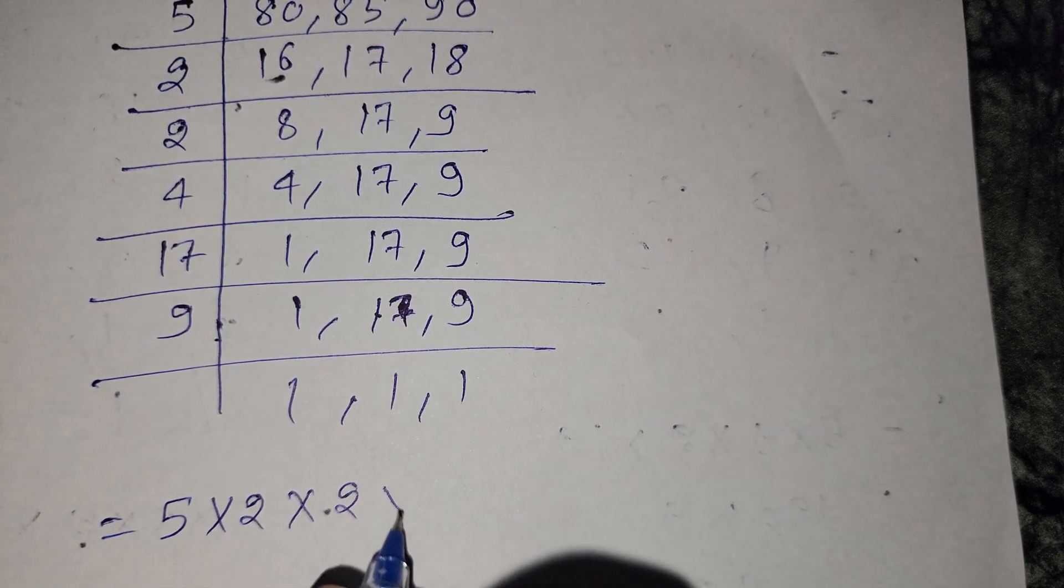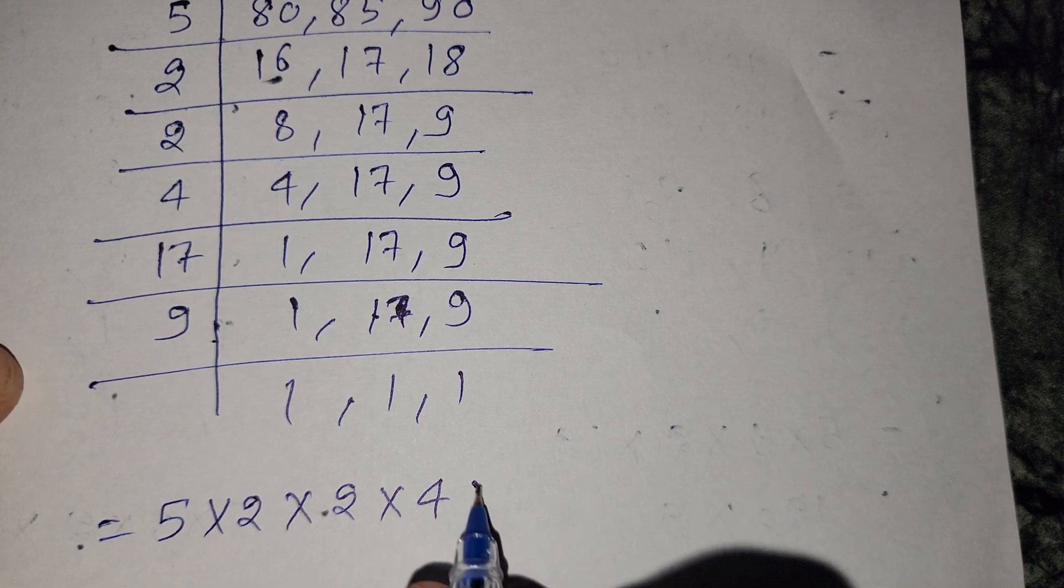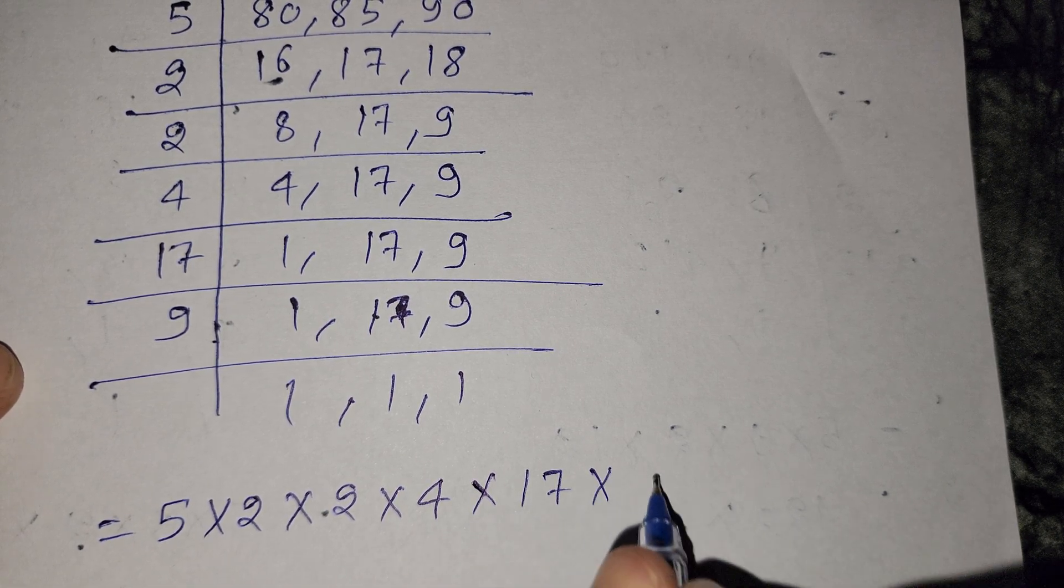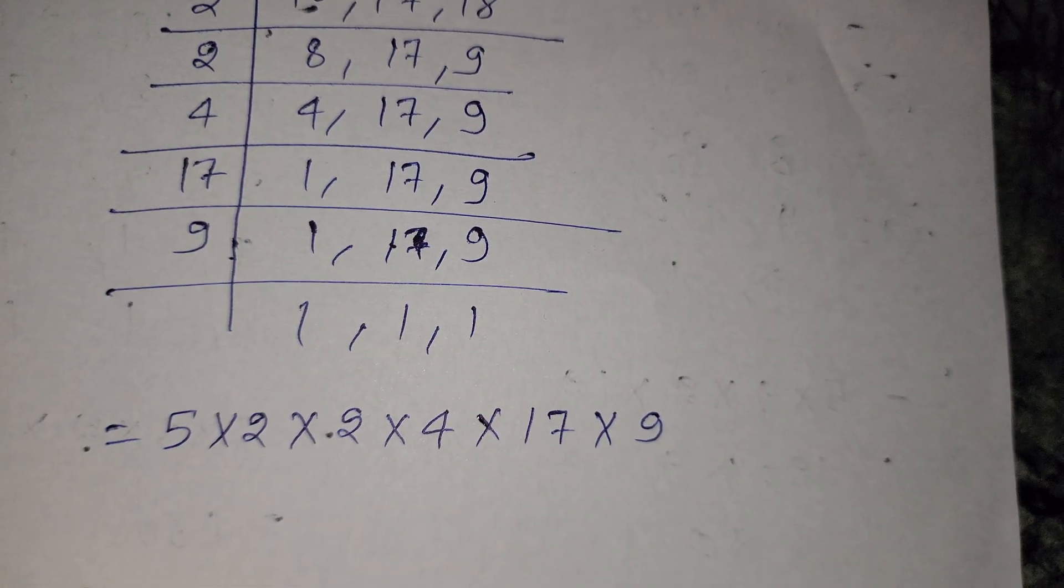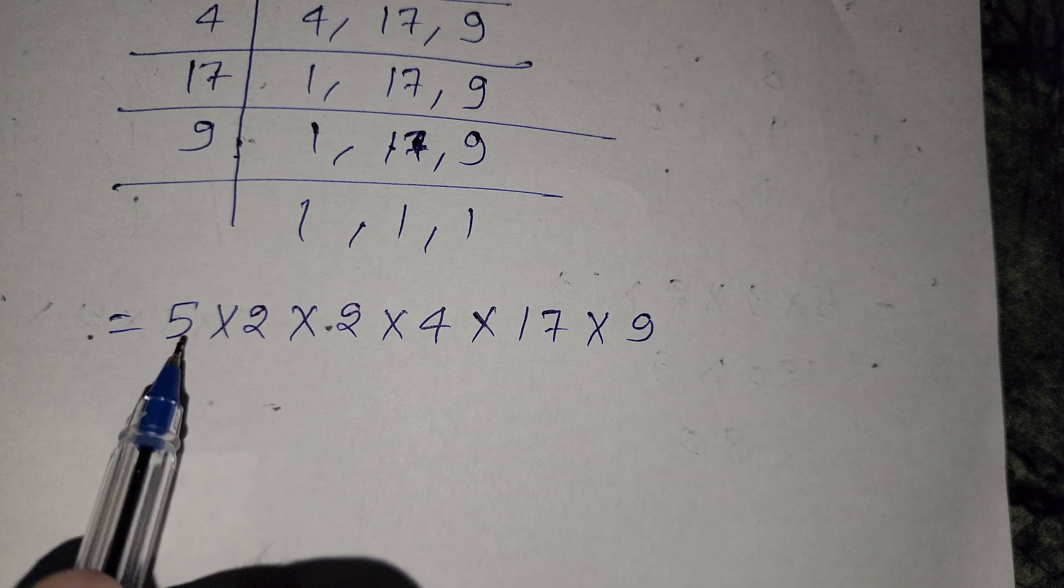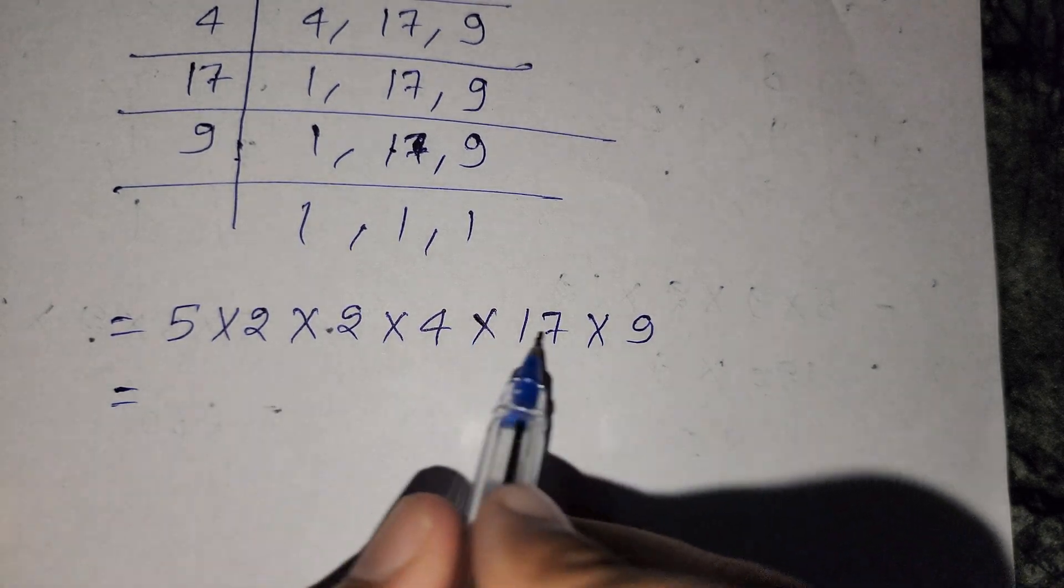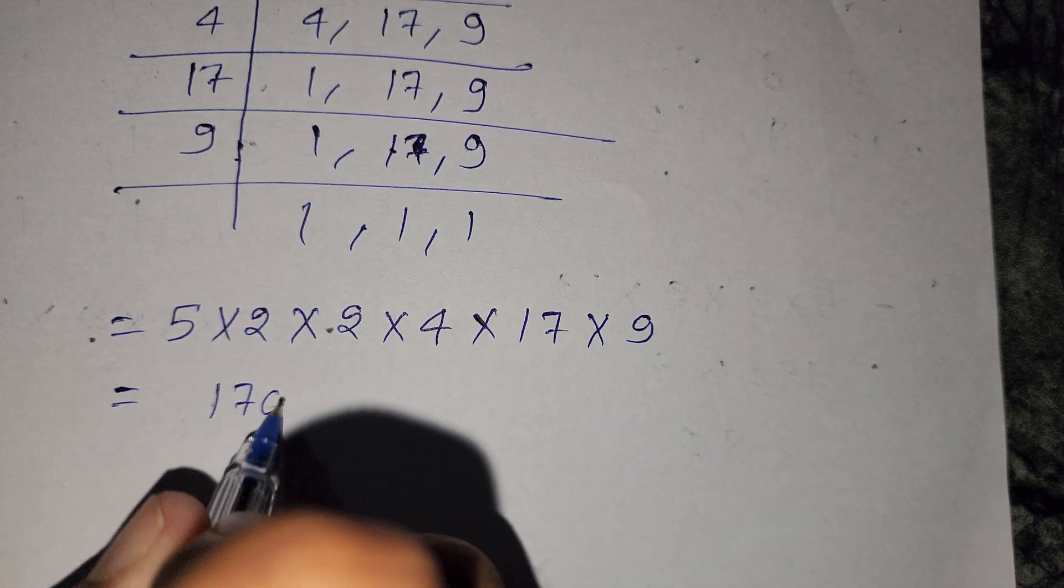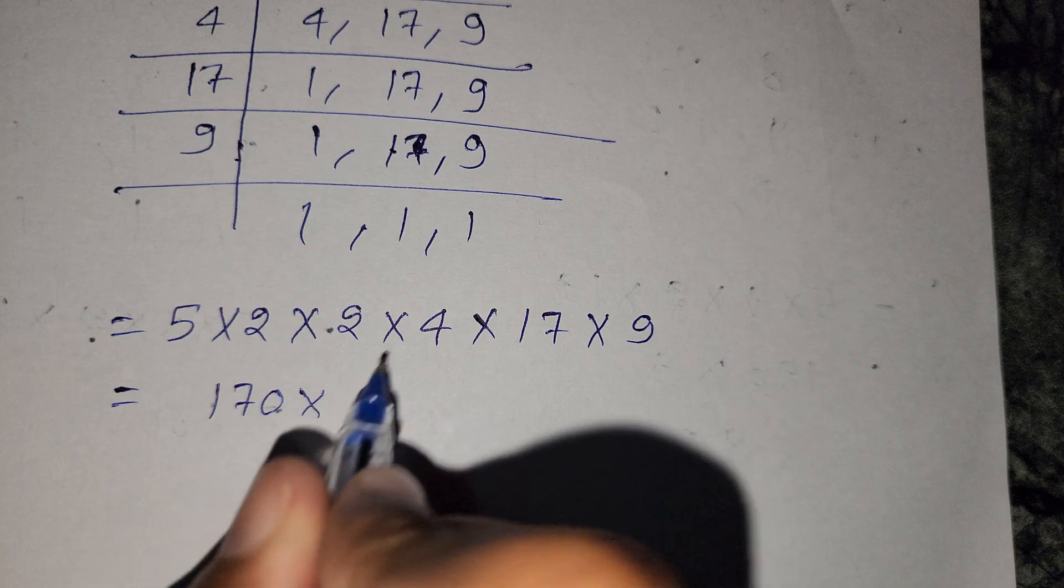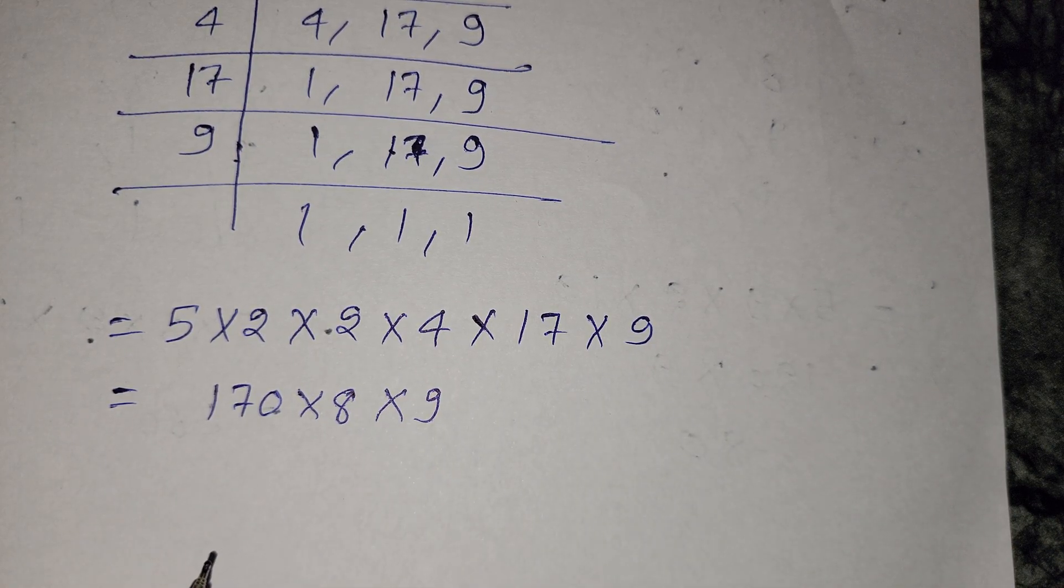So our prime factors are 5 multiply 2 multiply 2 multiply 4 multiply 17 multiply 9. Now first we multiply 5 times 2 to get 10, and 10 multiply 17 is 170. Then 4 times 8, and here is 1918. Now we divide by 8.